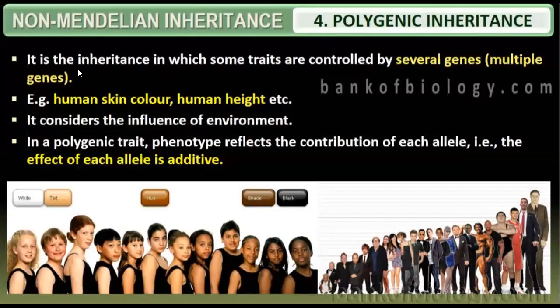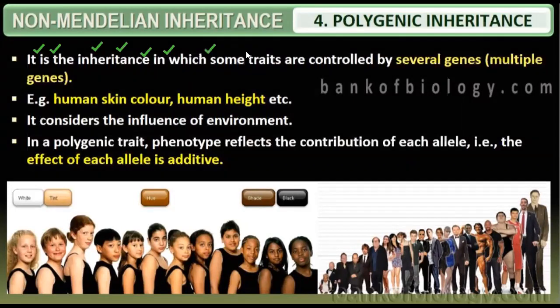Let's start with Polygenic Inheritance. Polygenic Inheritance is the inheritance in which some traits are controlled by several genes — that is, multiple genes. For one character, many genes are responsible. That's why it is known as multiple gene inheritance, and it is also called Polygenic Inheritance.